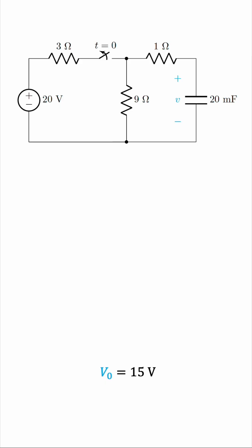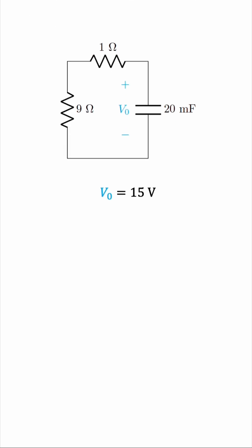What happens? The voltage source and the 3 ohm resistor are disconnected, and we have this small circuit where the capacitor is discharging through the resistance in the network. Okay, how can we find the voltage across the capacitor in this part of the circuit?